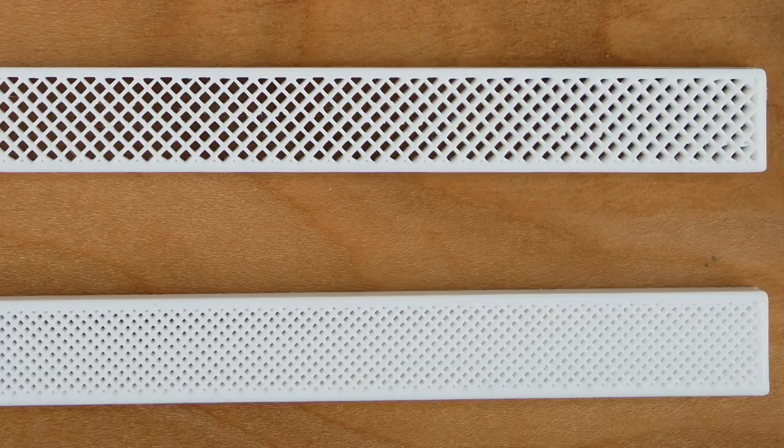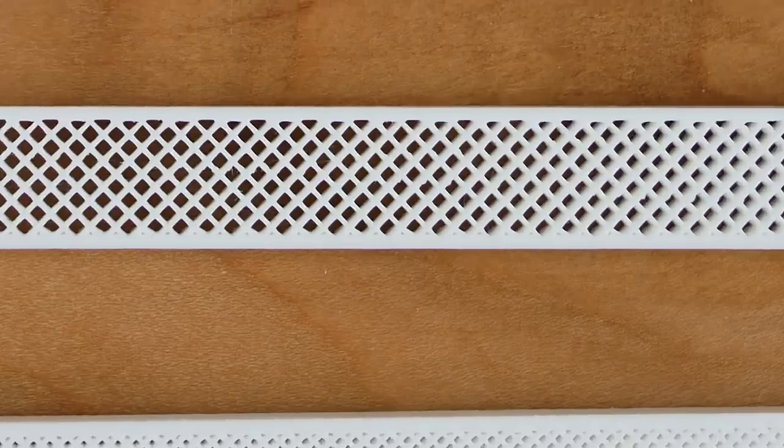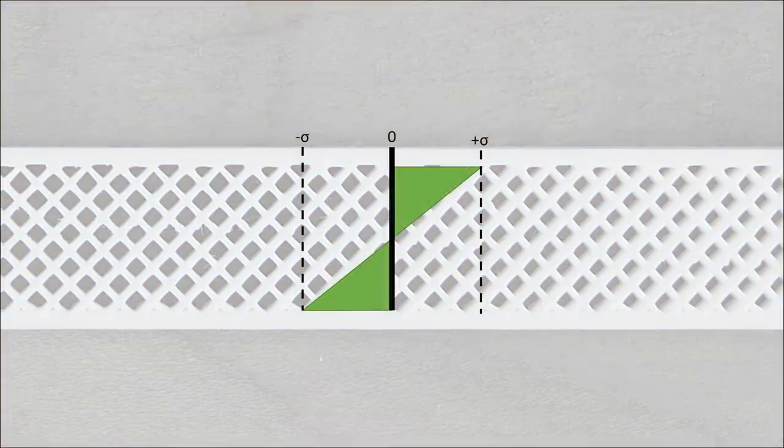If we 3D print our part it will usually have a closed outer shell and then sparse infill structure in the middle. For our bending beam this means that our infill is not loaded equally. The parts closer to the shell are more loaded than the center.